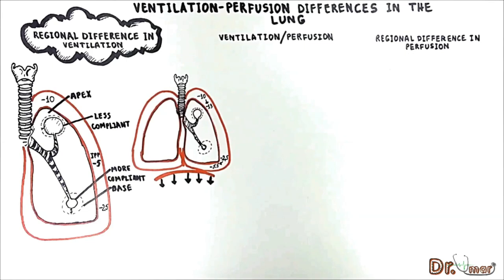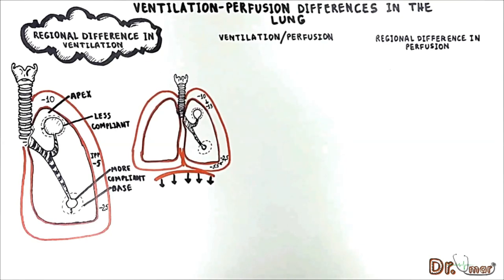During inspiration the apical alveolus opens only a little so a small amount of air reaches it, whereas the alveolus at the base opens wider so more air will reach it.